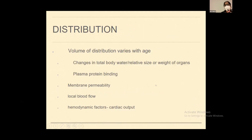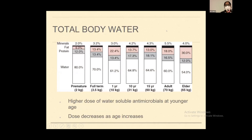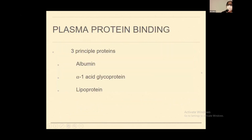Regarding distribution, volume of distribution also varies with age. There are changes in total body water and relative size or weight of organs as the child grows, and it also depends upon plasma protein binding, membrane permeability, local blood flow, and hemodynamic factors. The two most important things are total body water and plasma protein binding. Total body water varies from 80% in a premature 2 kg child to 60% in a 70 kg adult. Because total body water is higher at younger ages, there is a requirement for higher doses of water-soluble antimicrobials in younger children, which decreases as age increases. Body surface area is also proportionally greater in children, affecting drug dosage calculations.